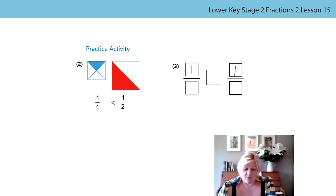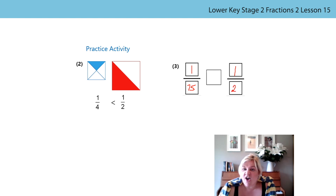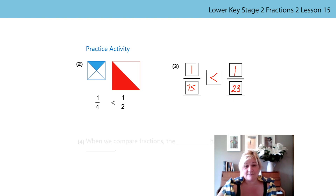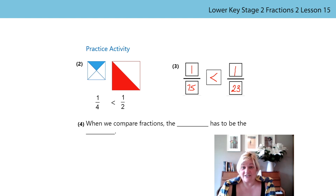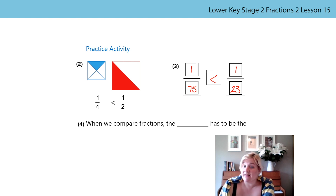You could look at what the largest and smallest denominator is. So if I had, say, one seventy-fifth and one twenty-third - my rule was that the greater the denominator, the smaller the part. So I knew that one seventy-fifth was smaller than one twenty-third. You could have had any numbers as long as it's mathematically correct. When we compare fractions, the whole has to be the same. Well done.